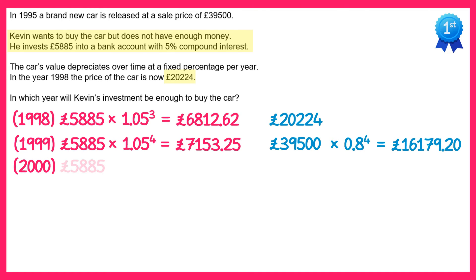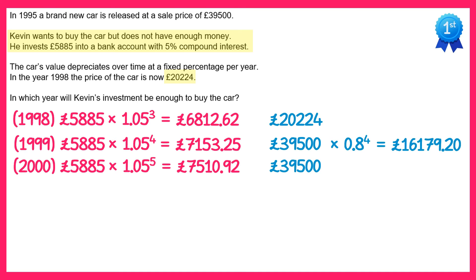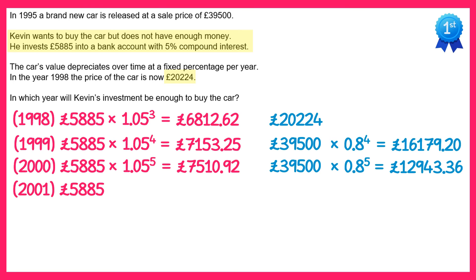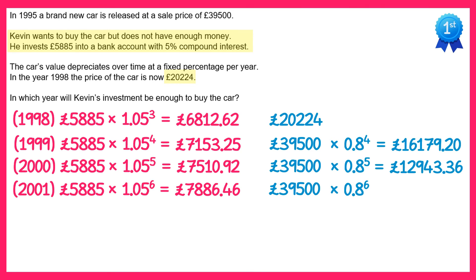In the year 2000, we multiply the investment by 1.05 to the power five, and for the car's value we multiply by 0.8 to the power five. We then repeat this for 2001, multiplying the investment by 1.05 to the power six and the car's value by 0.8 to the power six. We're getting closer but still don't have enough money.